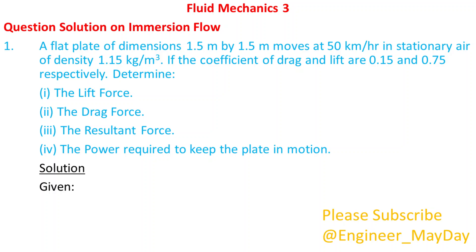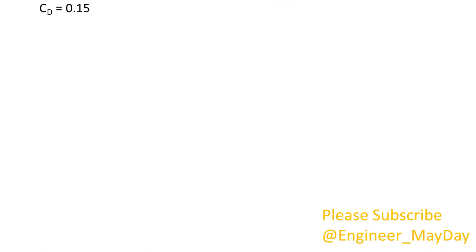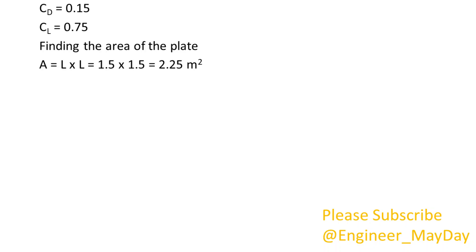Given: rho air equals 1.15 kilogram per cubic meter. U equals 13.89 meters per second. Cd equals 0.15. Cl equals 0.75. Finding the area of the plate: A equals 2.25 square meters.